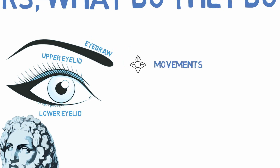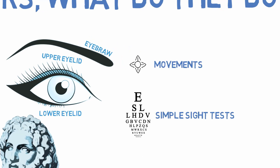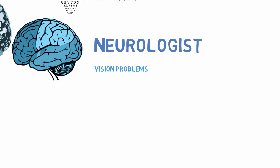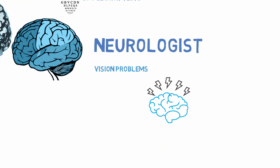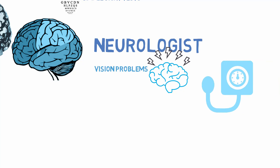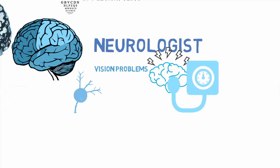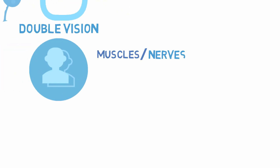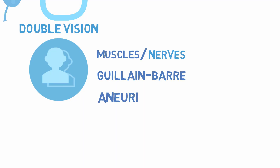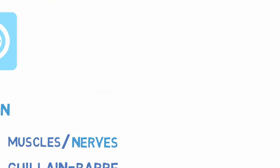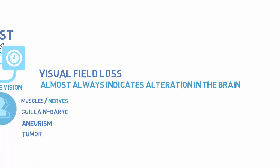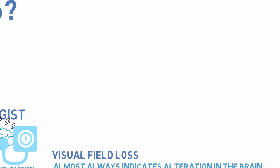They might also evaluate eye movements and visual acuity to determine if the patient needs an ophthalmologist or a neurologist. Patients might be evaluated by a neurologist if they present vision problems due to strokes, high pressure inside the cranial cavity, optic neuritis caused by inflammation to the optic nerve, double vision due to muscle weakness or paralysis, Guillain-Barré syndrome, aneurysms or tumors. Visual field loss almost always indicates an alteration of the brain and the need for a neurologist.